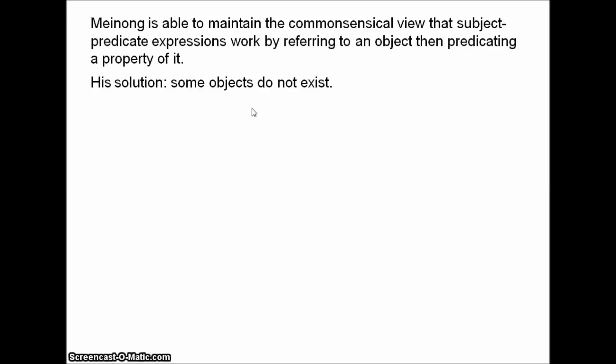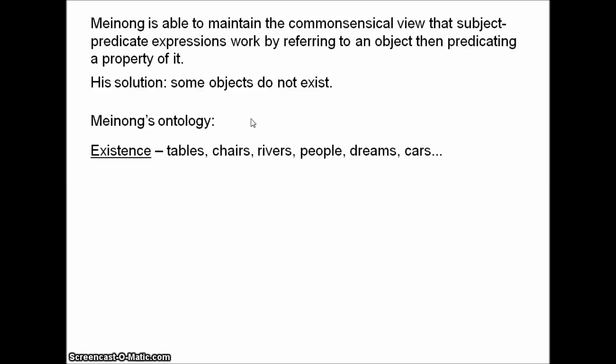So let's look at Meinong's ontology more closely. It was a fairly unusual ontology. Basically, Meinong holds that for any object, there are three ways it can be — three ways it might be classified. The first, and most familiar, is existence. Existence applies to all the things that we're familiar with: tables, chairs, rivers, people's dreams, cars, and so on — all the things that we usually take to exist. Some objects exist. That's reasonable, and something no one would disagree with.